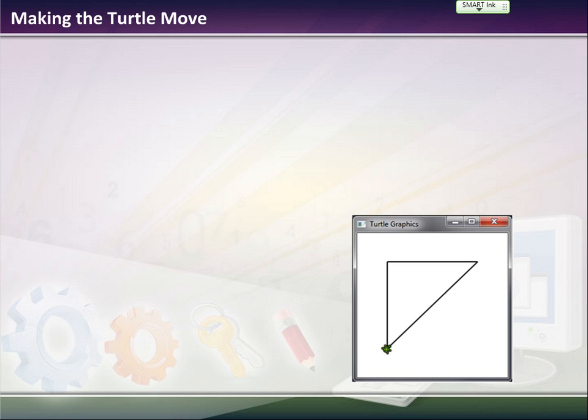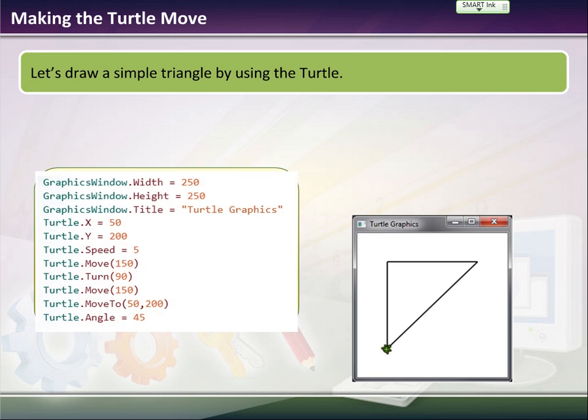And so, to make the turtle draw this triangle, what you could do is you create your graphic window, which has a width of 250, and the height of 250. And then the title is going to say Turtle Graphics, so that's where this comes from. We're going to start at 50 pixels to the right. So, if we start here, we go 50 over and come down 200. The speed is going to be 5. We're going to move 150 pixels.